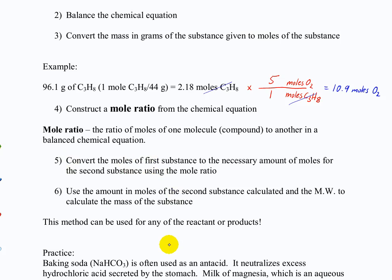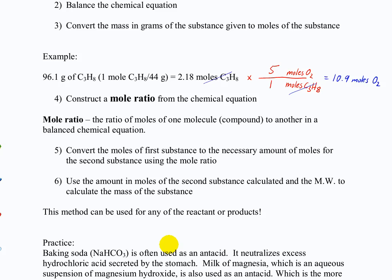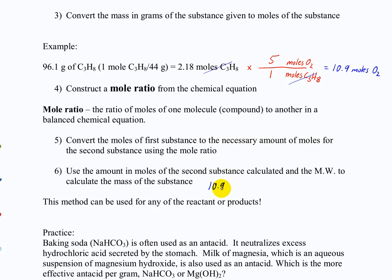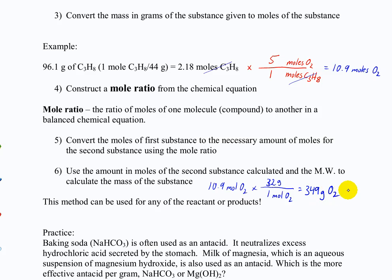And then for the final step of the problem, because it asks what the mass is, we convert back to mass. So we say 10.9 moles of oxygen times 32 grams per mole for oxygen. That gives us about 349 grams — that's how much oxygen we want to put in.